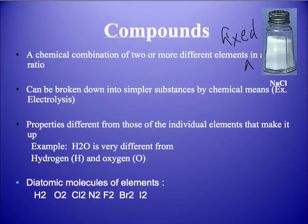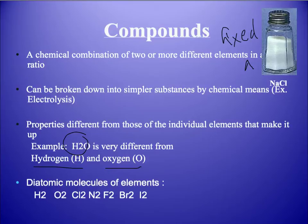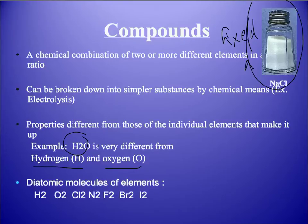Compounds have properties that are often different from those of the individual elements that make them up. For example, water (H2O) is very different from hydrogen and oxygen by themselves, which are both gases. Another example is table salt — sodium and chlorine (NaCl) combined. Sodium is a metal and chlorine is a very toxic gas, but together they form table salt.